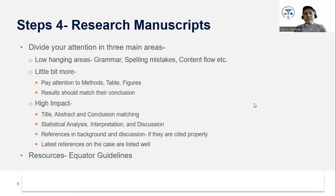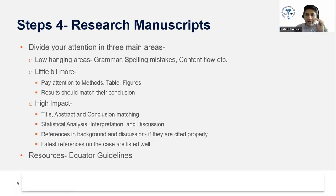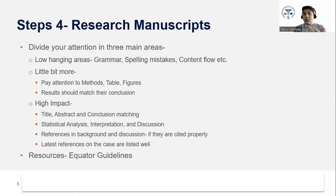For resources, search the EQUATOR guidelines — then specify the type of study: case-control, cohort study, clinical trial, and so on. You can provide the appropriate EQUATOR guideline link in your review, asking authors to follow those guidelines when formatting their paper. You need to know what the guidelines are first, but once you do, you can include the link directly in your review section.